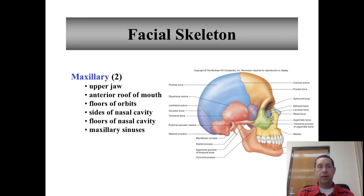There's two of them, a left and a right. They form the upper jaw, the anterior roof of the mouth, the floor of the orbit, the sides of the nasal cavities, the floor of the nasal cavities. They're the only facial bone that has a sinus — the maxillary sinuses.